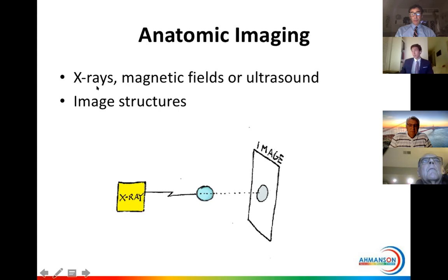Anatomical imaging modalities use x-rays, magnetic fields, and ultrasound — they image structure. In the case of x-rays or CAT scans, you have a machine that produces x-rays. They're sent through the body, and the x-rays get changed by traveling through the body, and that information can be used to create an image.